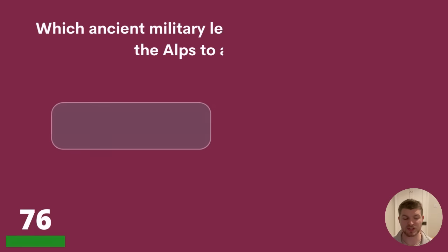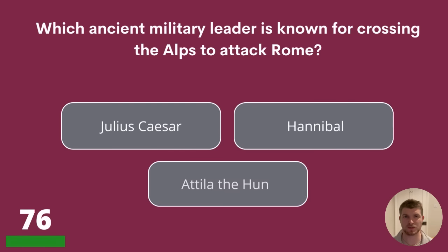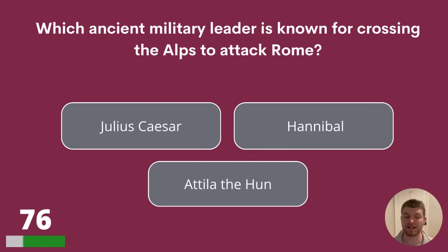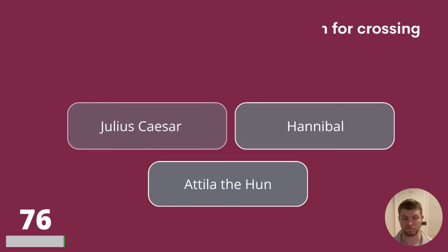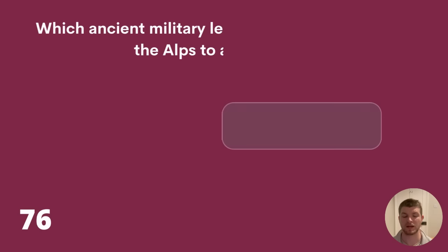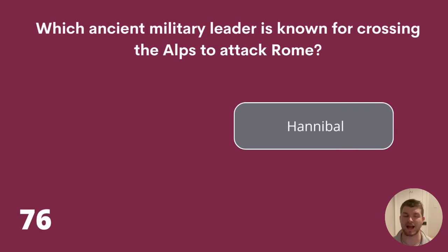Question 76. We've got 25 questions to go. Which ancient military leader is known for crossing the Alps to attack Rome? Julius Caesar, Hannibal, or Attila the Hun? The answer is Hannibal.